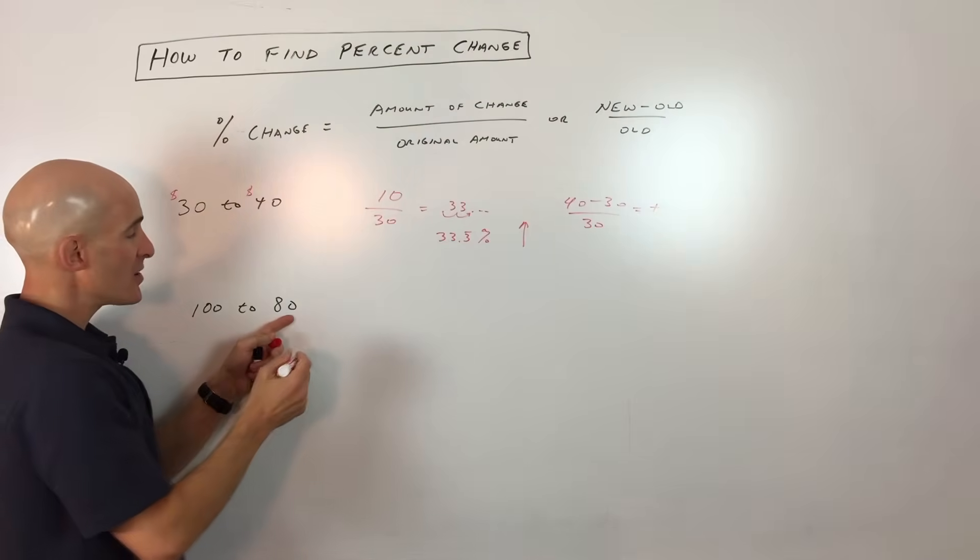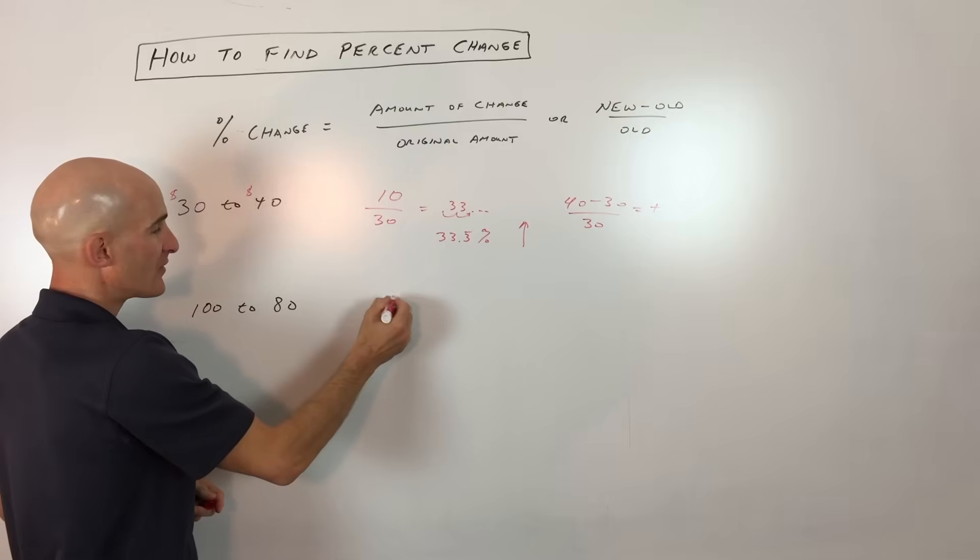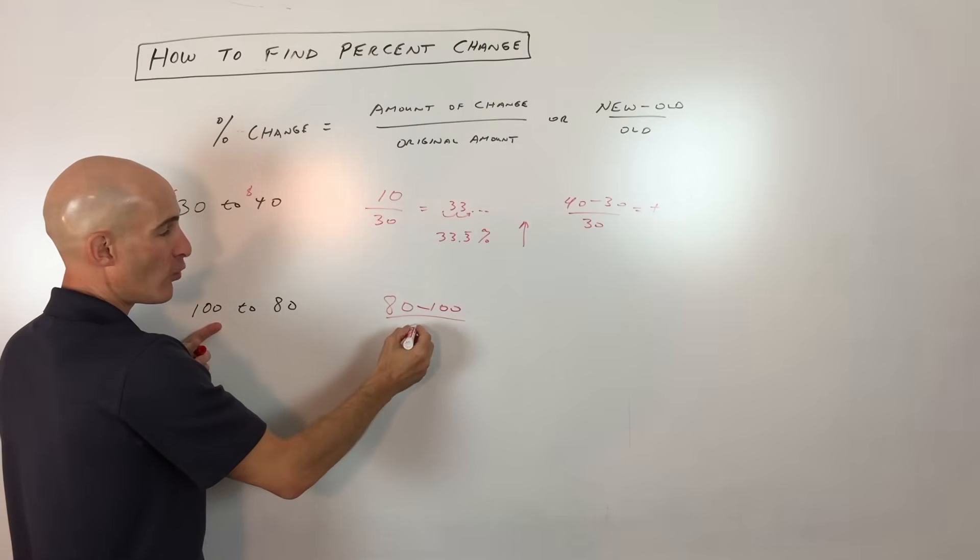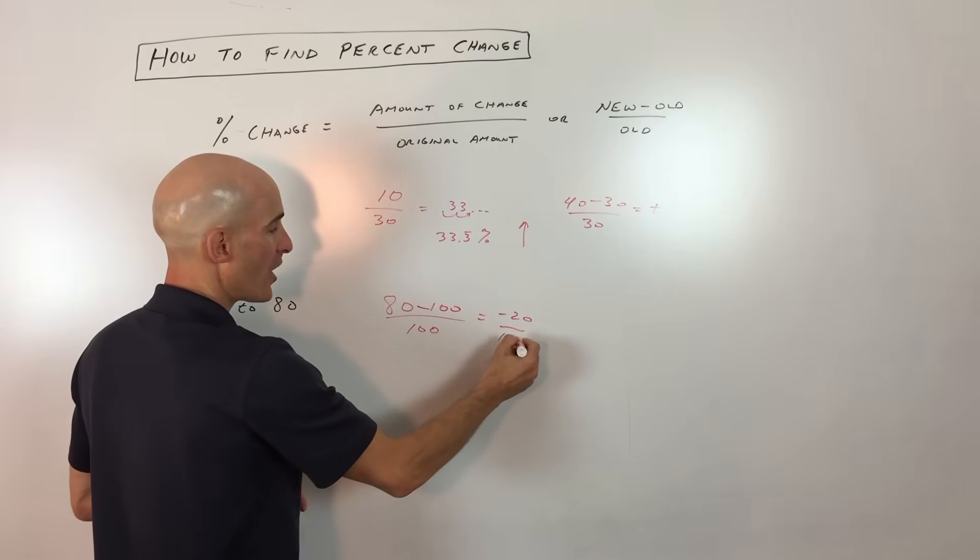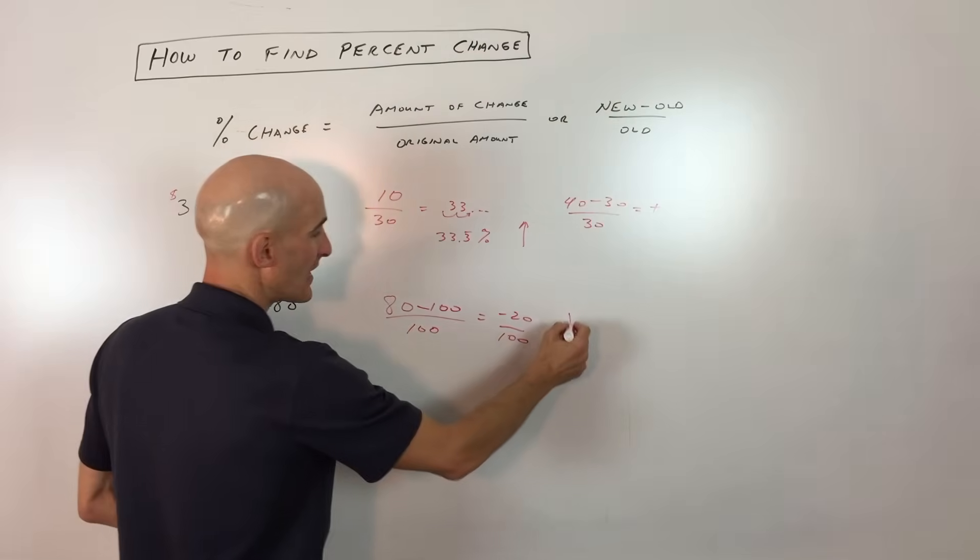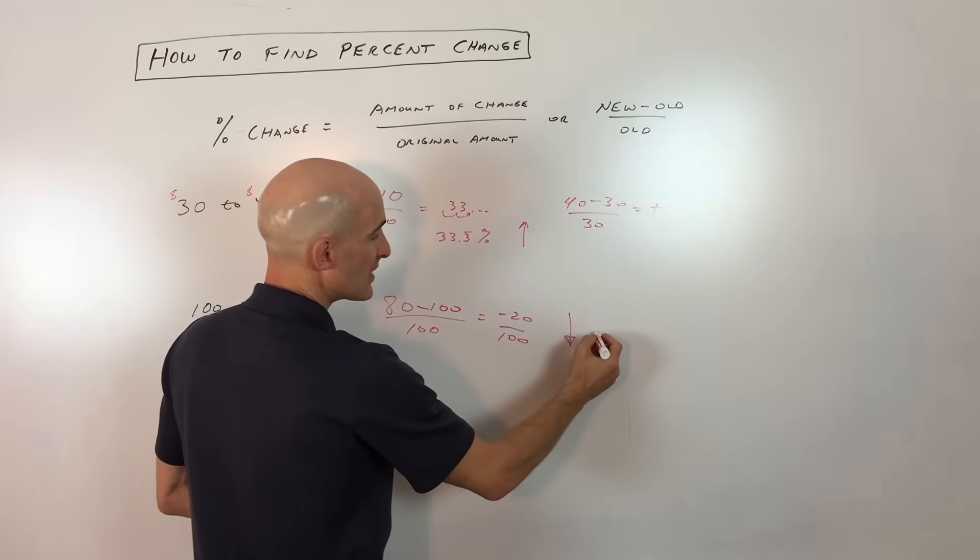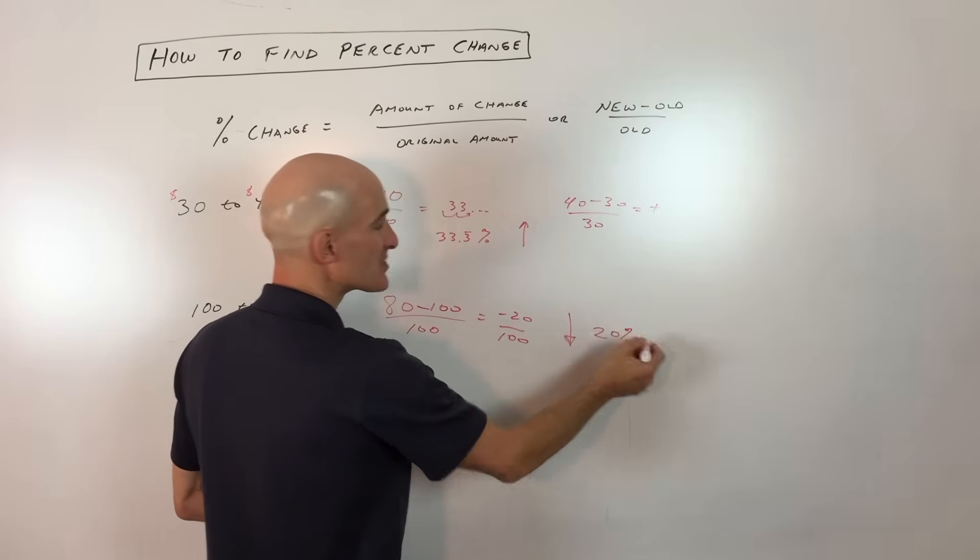100 to 80. So here we'll use my formula: new minus old over old. We've got the new amount 80, minus the old amount which is 100, divided by the old amount which is 100. So you can see this is coming out to negative 20 over 100. That negative just tells me it's going to be a decrease. And if I divide these, I'm getting 0.20, which is 20%, so it's a 20% decrease.